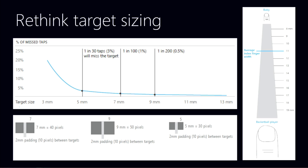Going above the ideal range is easier to touch but uses more screen real estate. As you design your applications, you should think about people using touch and make sure touch targets are the right size — in that 40 to 50 pixel range for most screens.